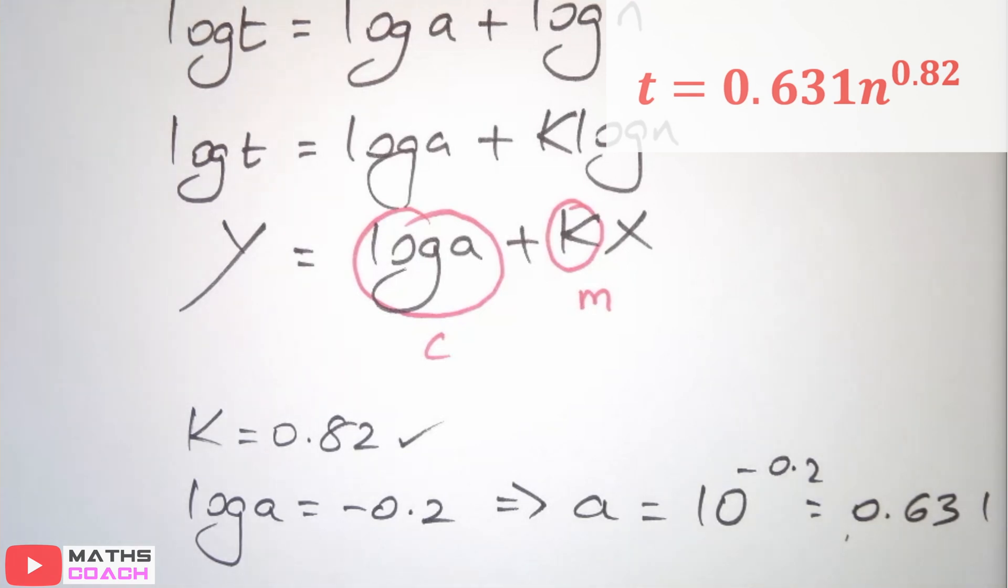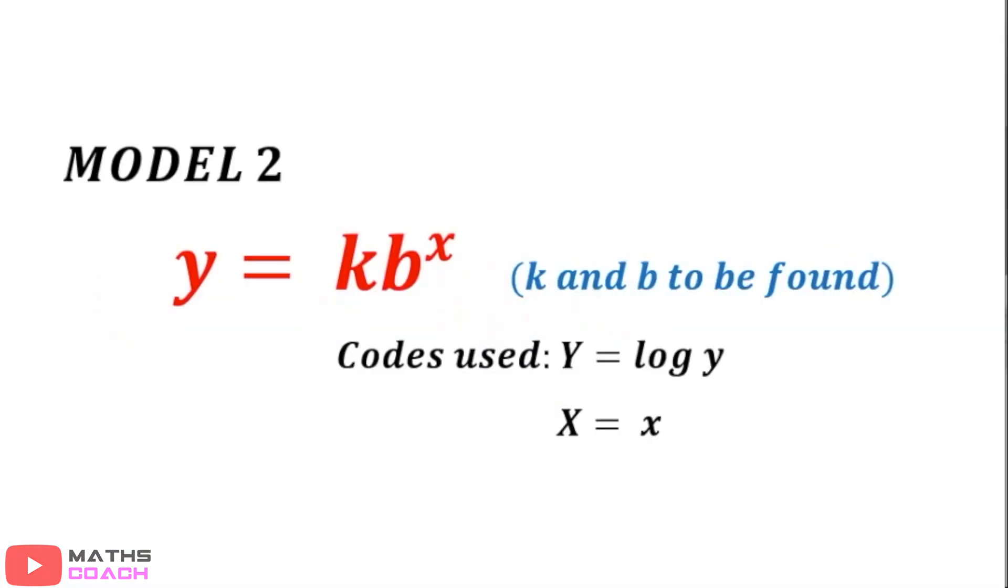I did say earlier, this is one of two models, so we now have to go to model 2. So, model 2 is y equals k, b, x. Now notice the difference in the position and the displacement now of x compared to model 1. Here, if you get a question based on model 2, k and b are the unknowns to be found. We are given codes, y equals log y, but here, because it's model 2, x is simply x.